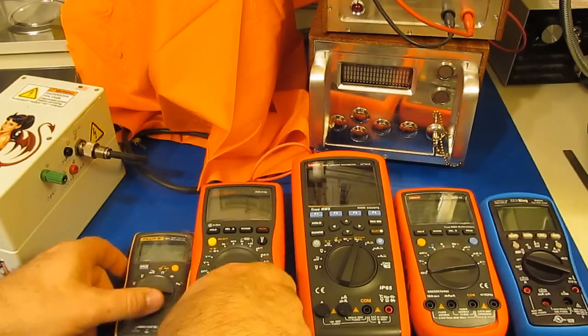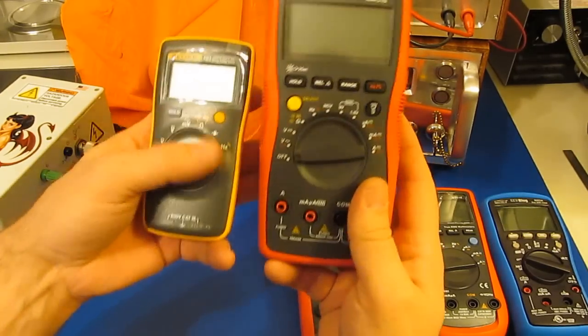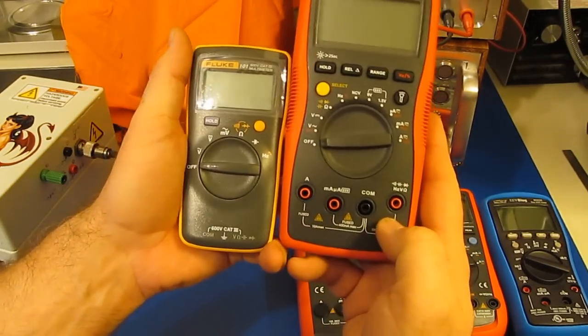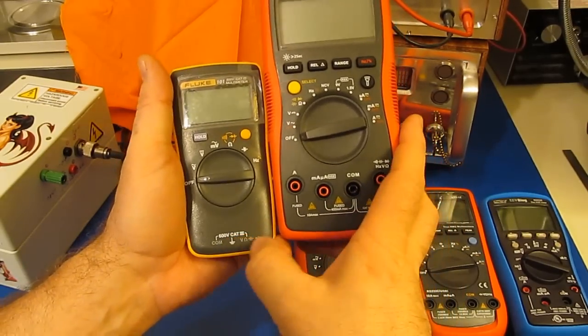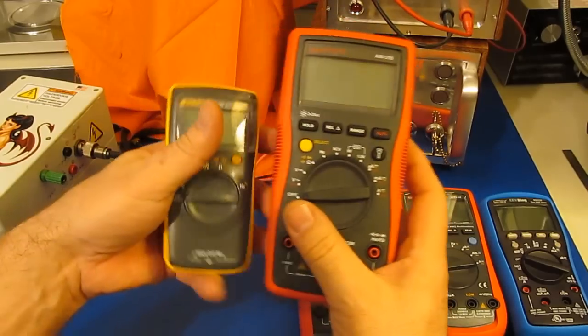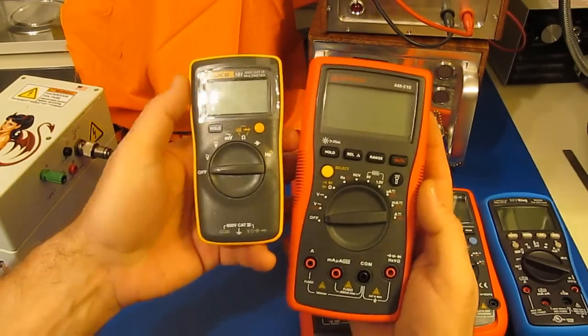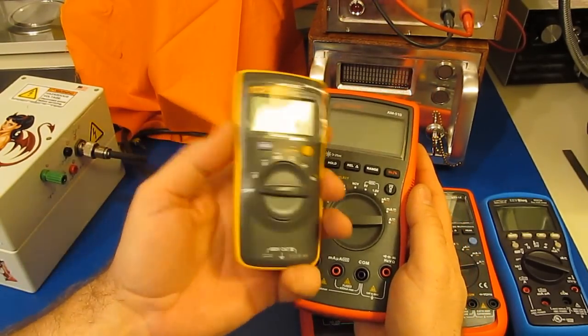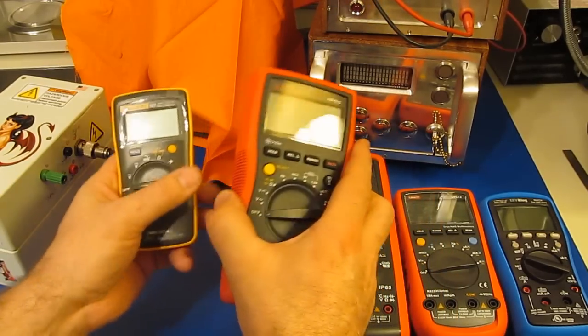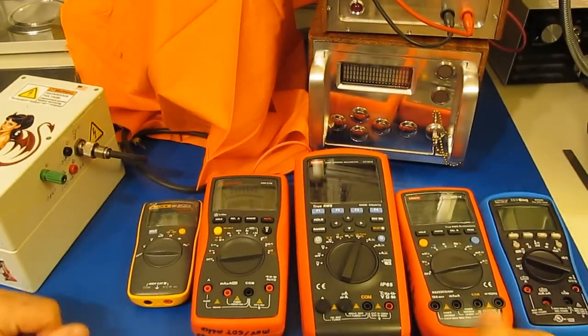I started out the transient testing doing a shootout of $50 meters. They all had to be fused and they had to have a minimum of a CAT 3 600 volt rating on them. These ended up being the two finalists of that shootout, and eventually this Fluke 101 took it as the 510 was damaged.